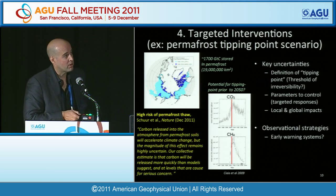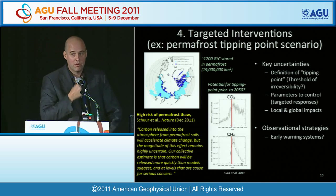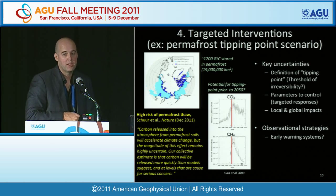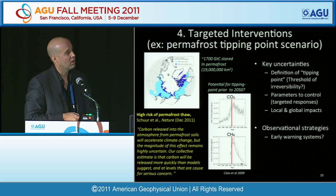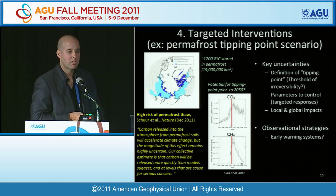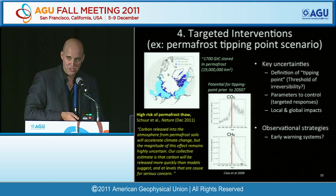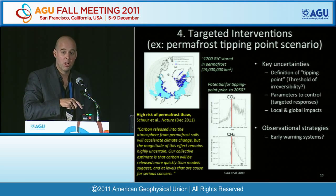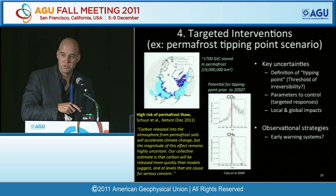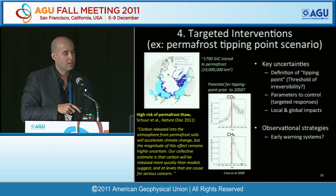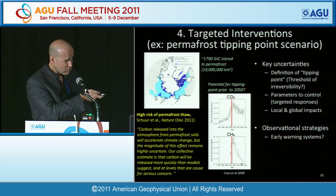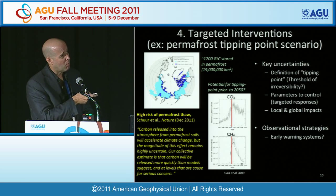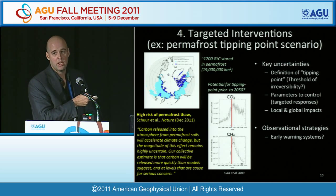The last focus area is on targeted interventions — also called regional geoengineering, sectoral geoengineering, or extreme adaptation. Rather than trying to address the whole climate problem, this is about trying to tourniquet specific perceived emergencies or impacts while making sure you don't put the tourniquet around your neck. One example we looked at was the field of Arctic tipping points, and specifically the permafrost tipping point scenario.